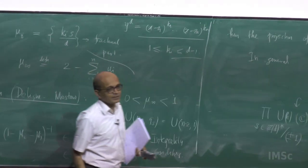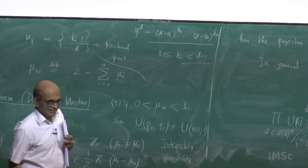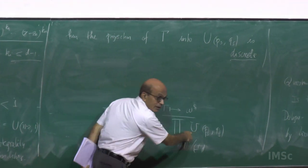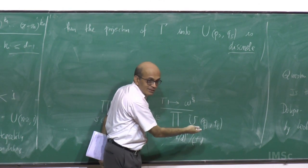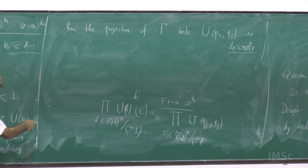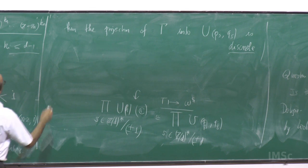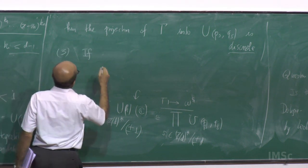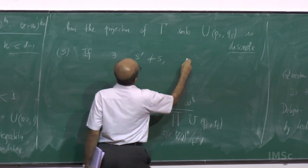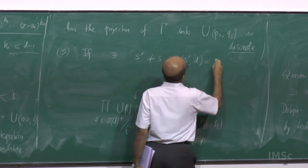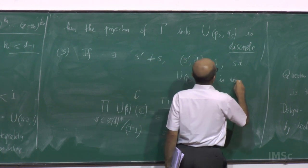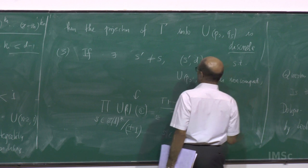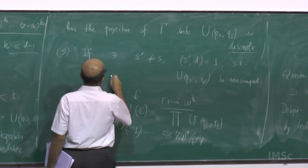This would mean it is thin — more or less. Well, just a moment. If you knew that all the other factors were compact and only this U(n−2, 1) factor is non-compact, then it would not be thin — in fact it will be arithmetic. So if there exists some s′ ≠ s with gcd = 1 such that U(p_{s′}, q_{s′}) is non-compact, then gamma is thin.